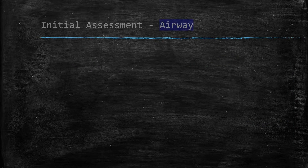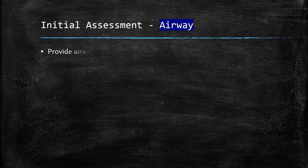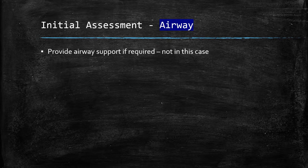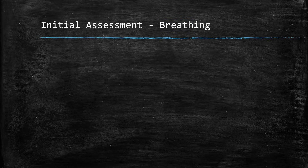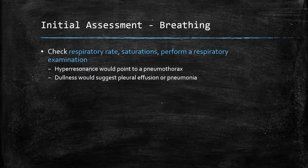As in any patient, we will follow the ABCDEs of initial assessment. Starting with the airway — does this patient need airway support? In this case, no. Moving on, we perform a full respiratory examination. We can make pneumothorax less likely as a diagnosis, as can pneumonia and pleural effusion, based on hyperresonance and dullness respectively. Tachypnea and tachycardia, if present, would allude to pulmonary embolism, although this patient has no risk factors for that condition — therefore unlikely.